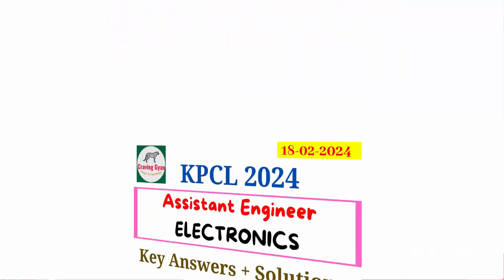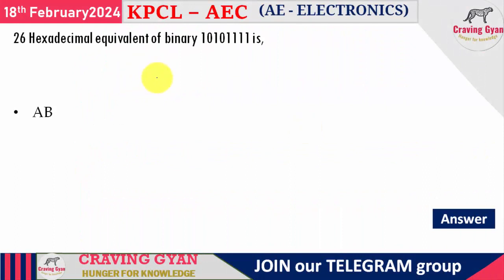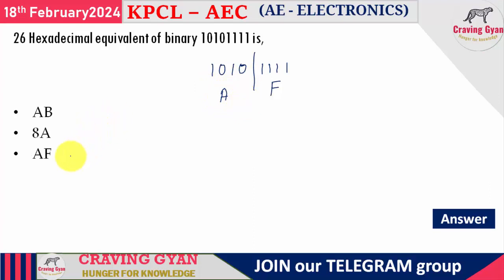26th question: find the hexadecimal equivalent of 10101111. Since they are asking for hexadecimal, we group from the left in 4-bit groups. 1010 means A and 1111 means F. So the answer is AF. The third option is AF, so option 3 is correct — AF in hexadecimal equals 10101111 in binary.